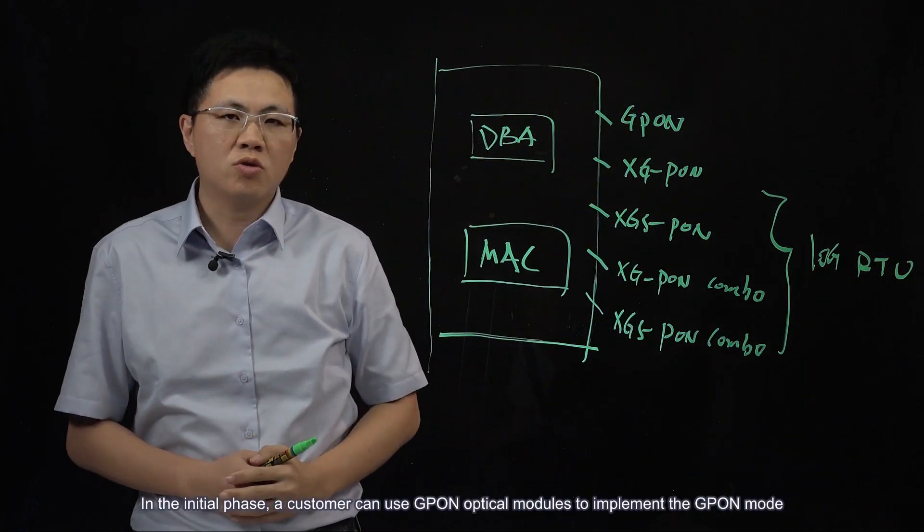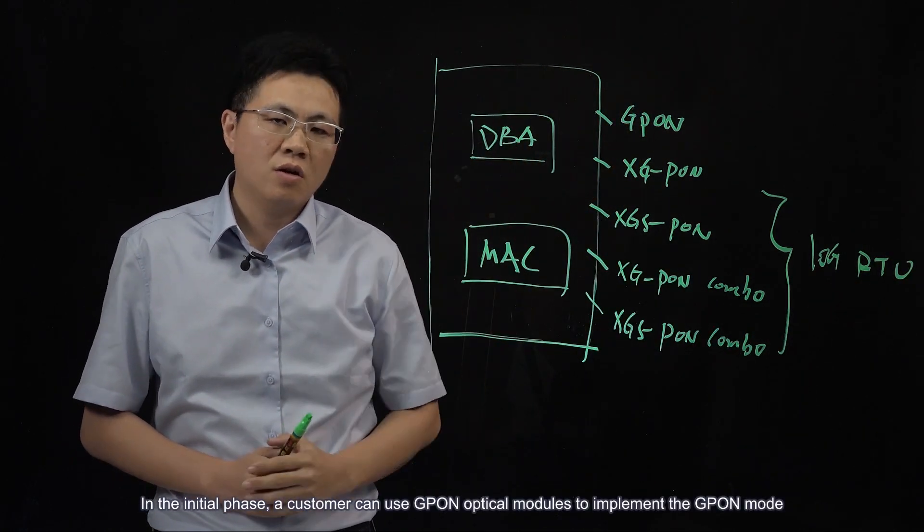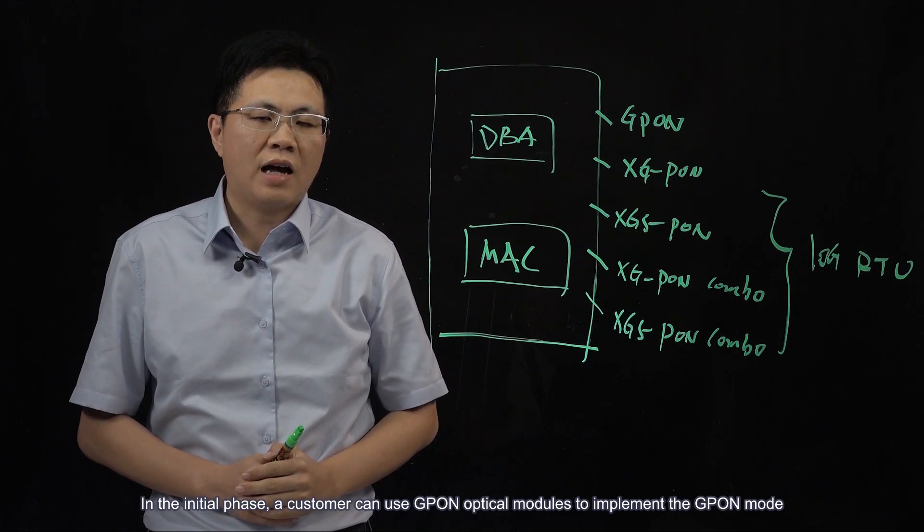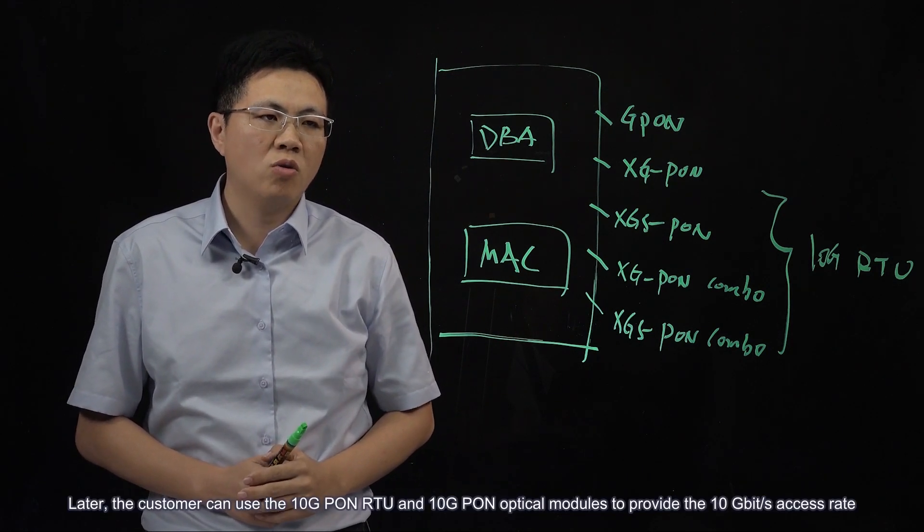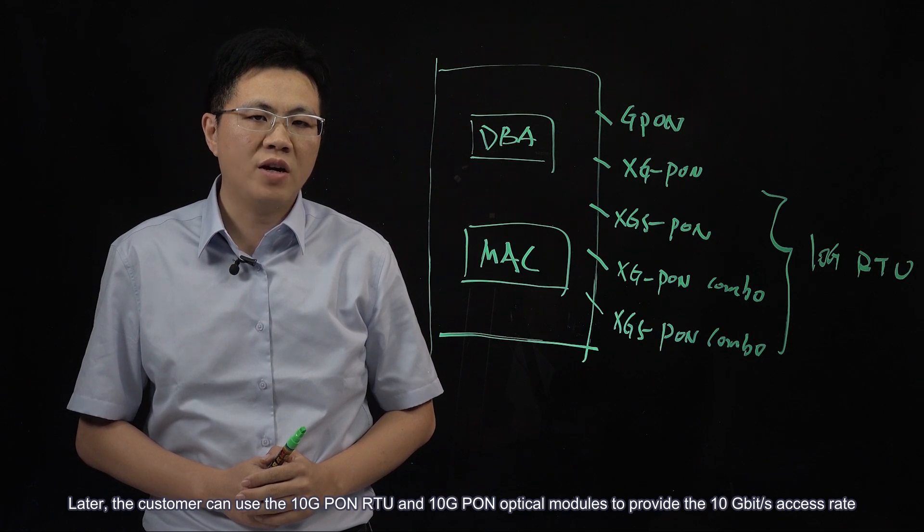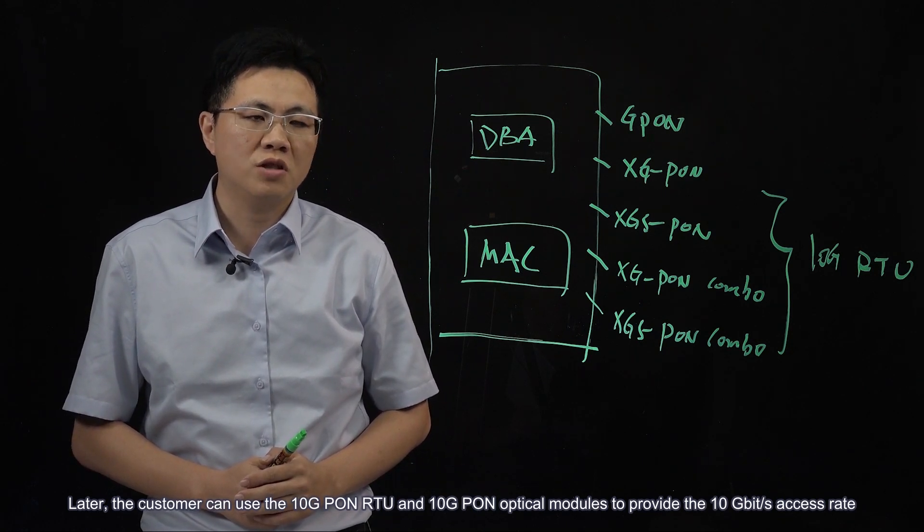In the initial phase, a customer can use G-Pon optical modules to implement the G-Pon mode. Later, the customer can use the 10G-Pon RTU and 10G-Pon optical modules to provide the 10 gigabits per second access rate.